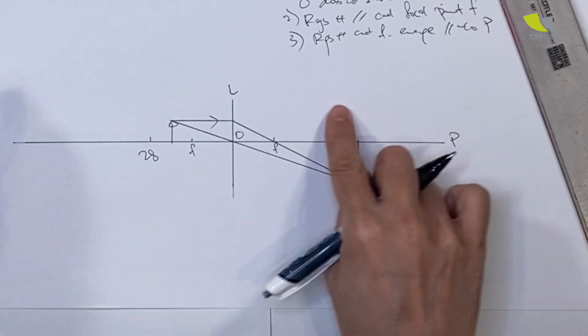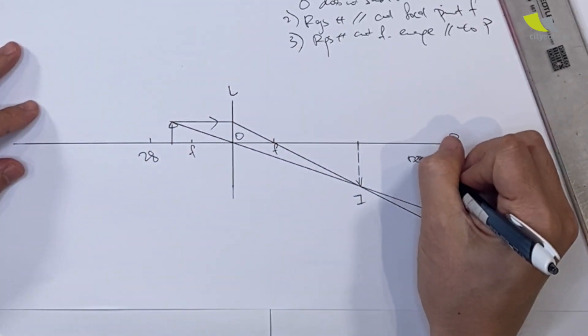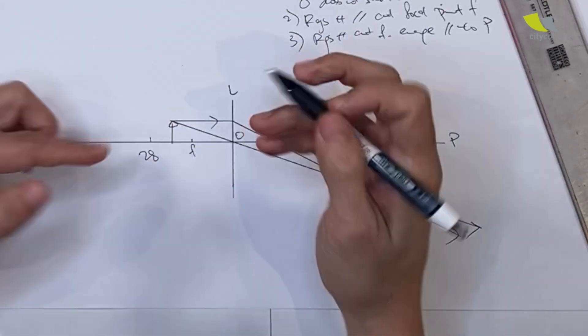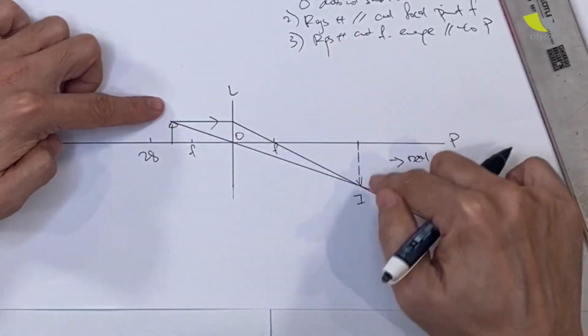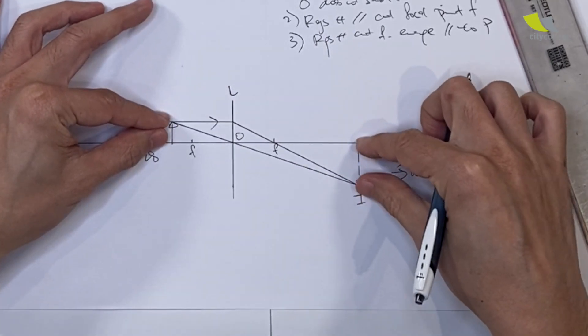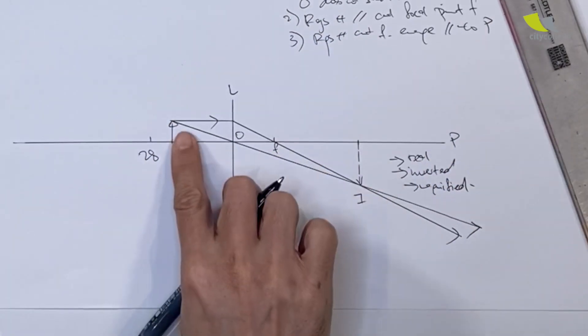Where the two rays cut, this will be my image. Let's talk about this image. Because this image is formed by two actual light rays, first it is real. Secondly, the arrowhead originally is above the axis, now it's below the axis, so it's inverted. Number three, if you look at the size, this is bigger than the object, so it's magnified.